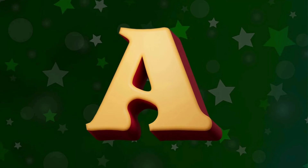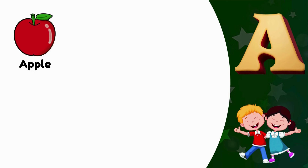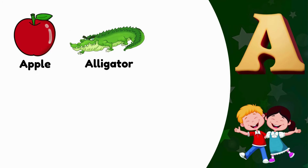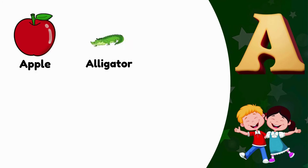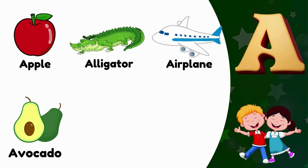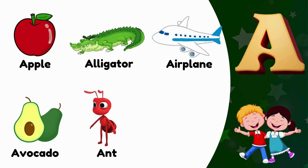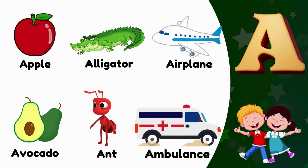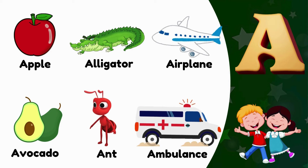A. A is for Apple. A is for Alligator. A is for Airplane. A is for Avocado. A is for Ant. A is for Ambulance.